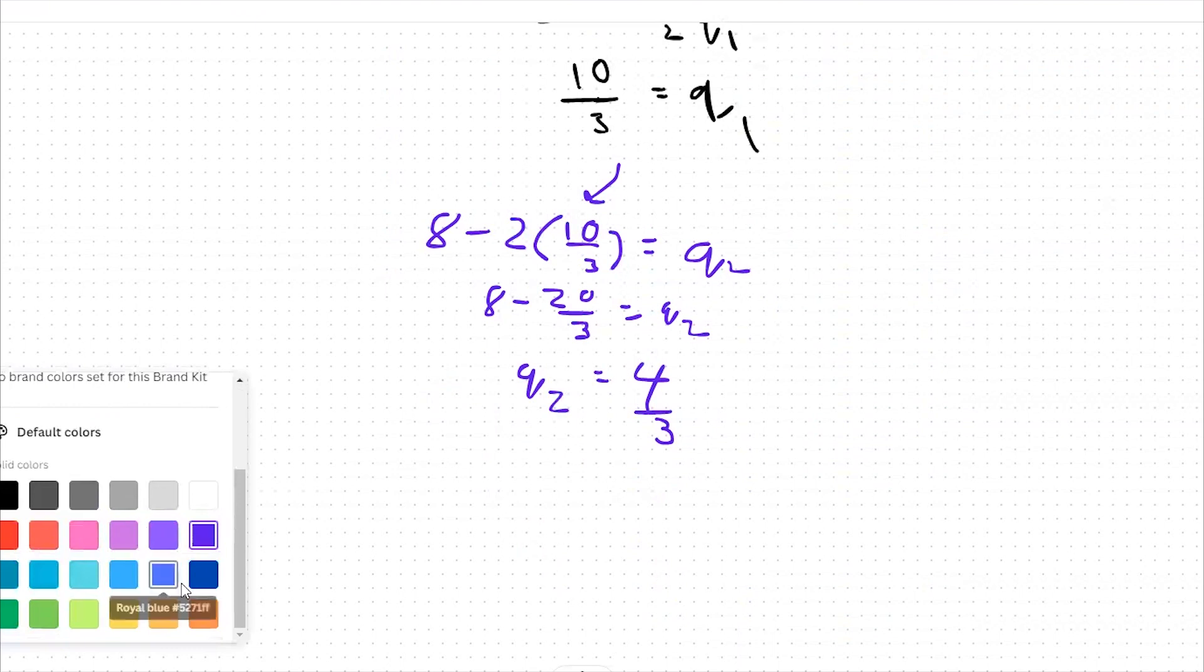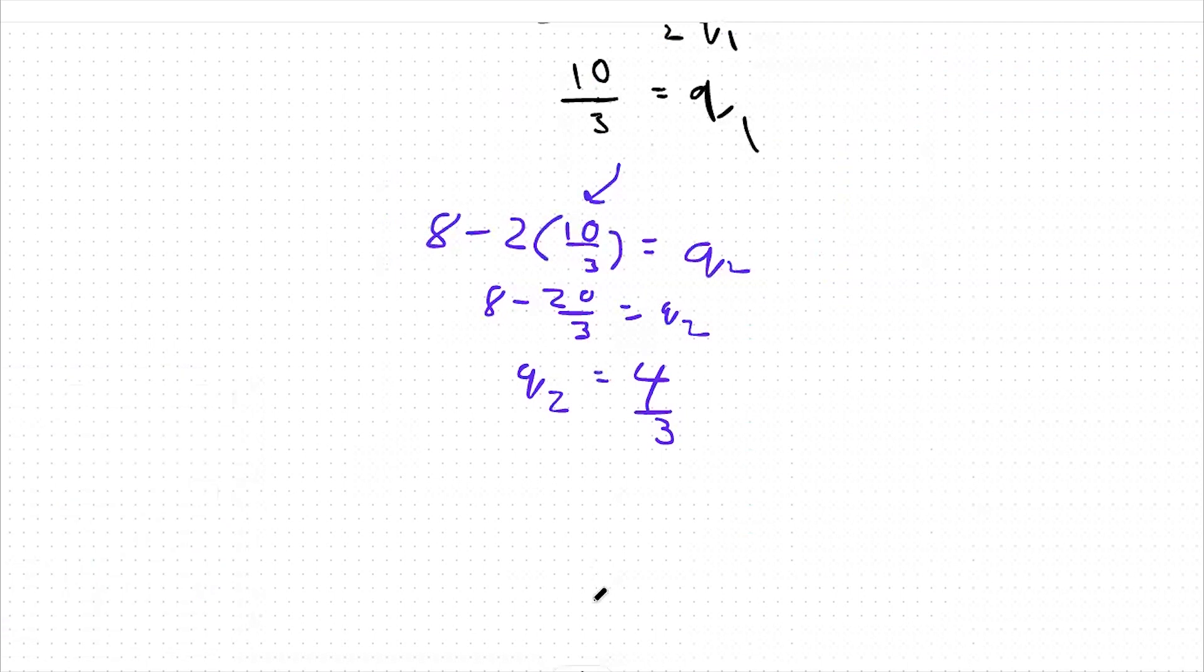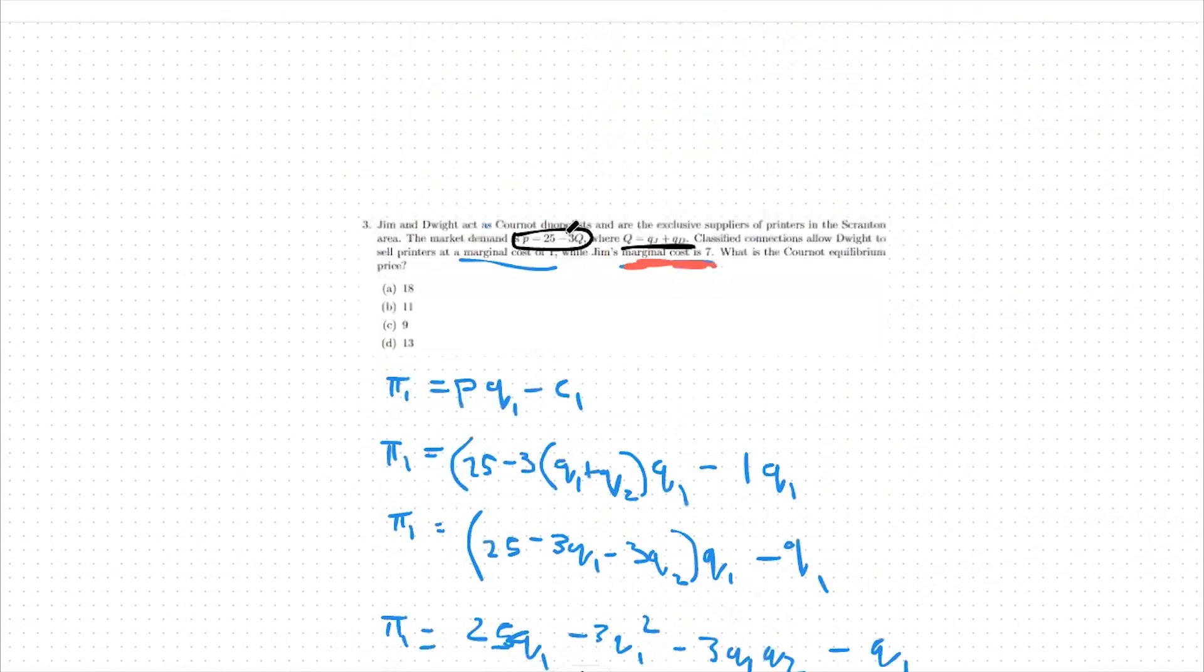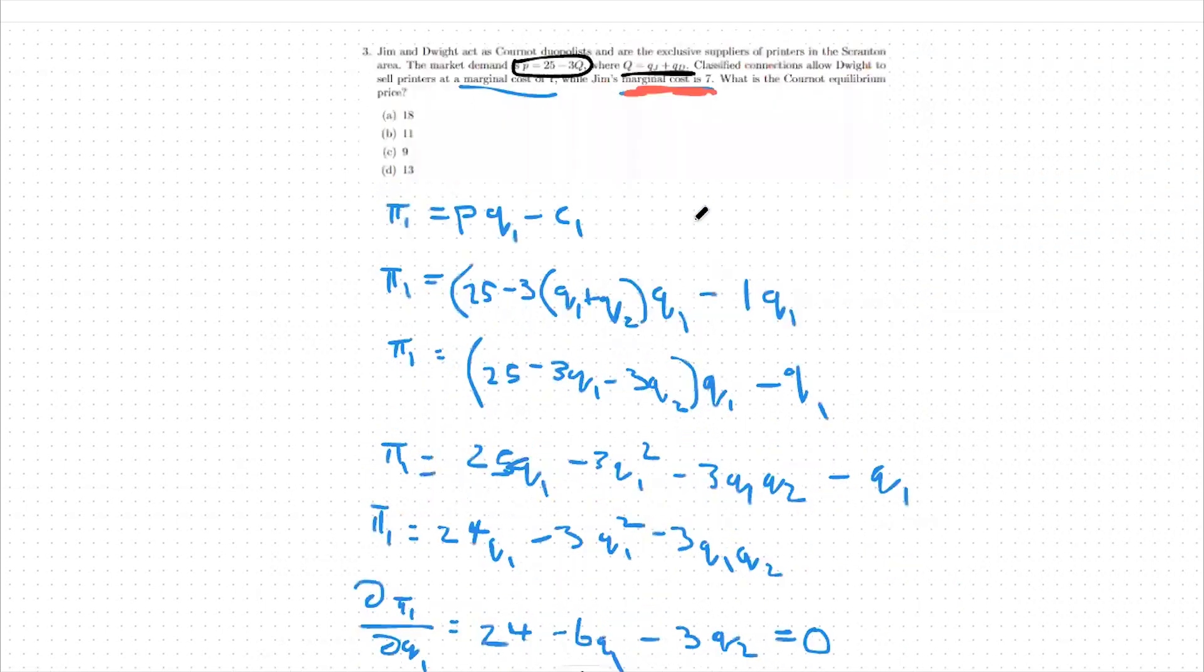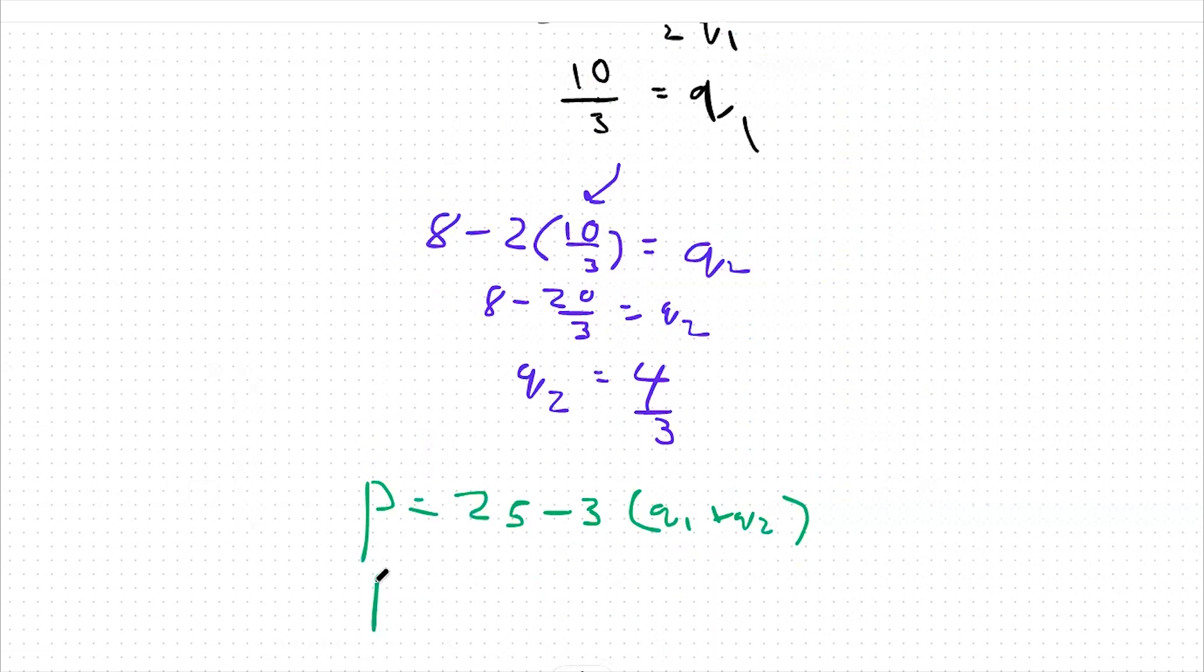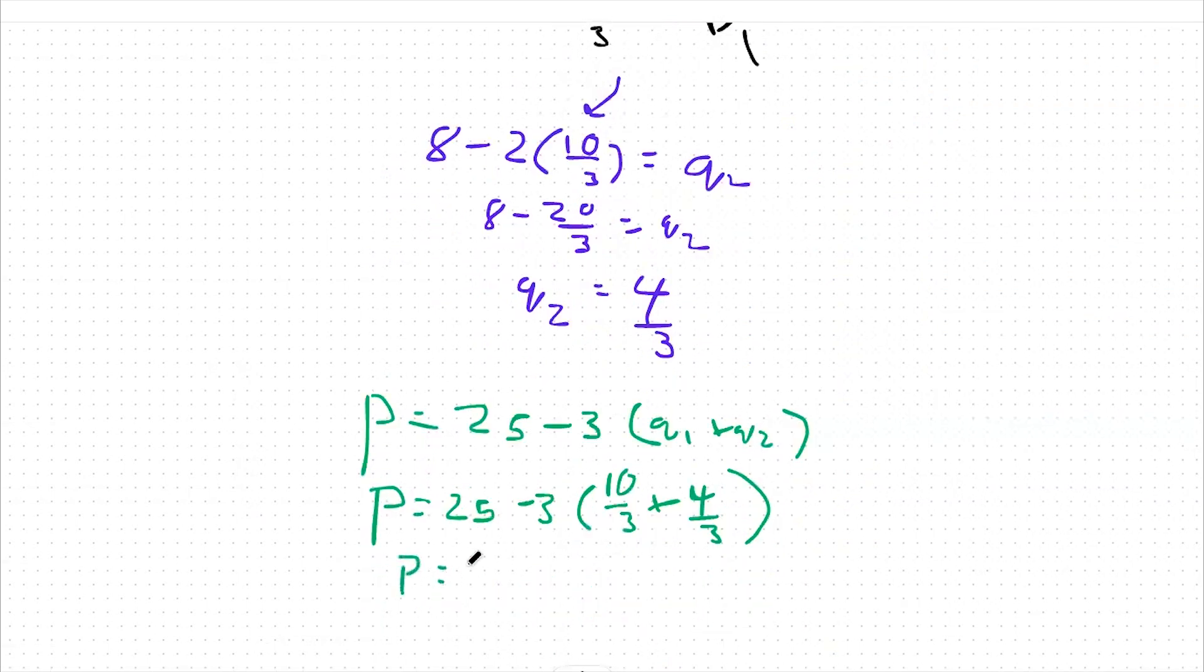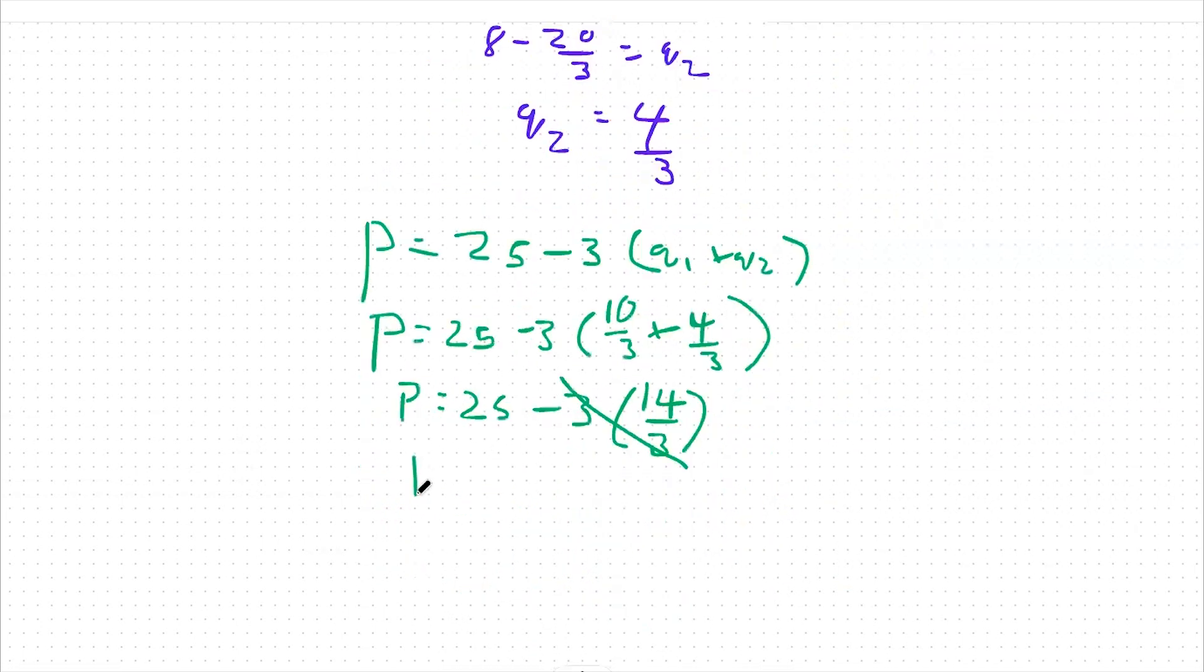From there, we're getting close to the end. One of our last steps is to take these two qs and plug them into our original price equation. So again, price is equal to 25 minus 3 times q1 plus q2, right? Again, it's 25 minus 3 times this big q, and that big q is q1 plus q2. We just solved for q1 and q2. So I can say p is equal to 25 minus 3 times 10 over 3 plus 4 over 3. So that means p is equal to 25 minus 3 times 14 over 3. Cross these 3s out. So p is equal to 25 minus 14. So our equilibrium Cournot price is $11 per unit.